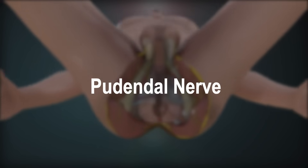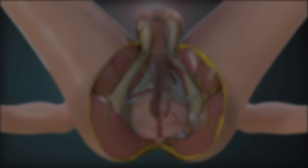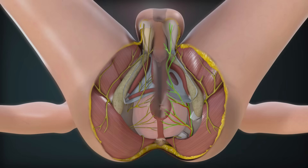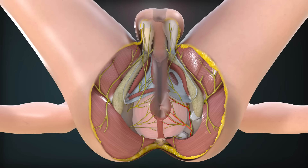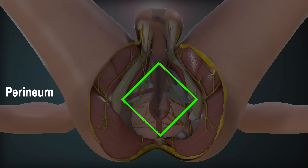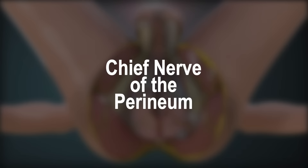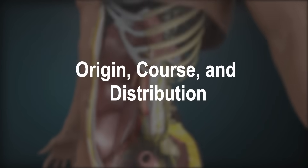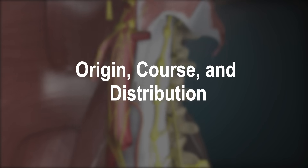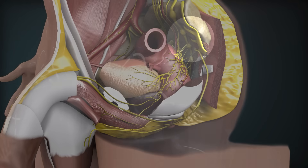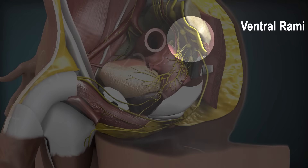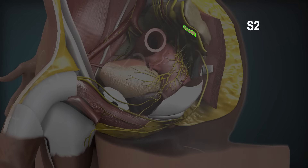The pudendal nerve provides principal innervation to the perineum, hence it is designated as the chief nerve of the perineum. Origin, course and distribution: It arises from the ventral rami of S2, S3, S4 nerves in the pelvis.